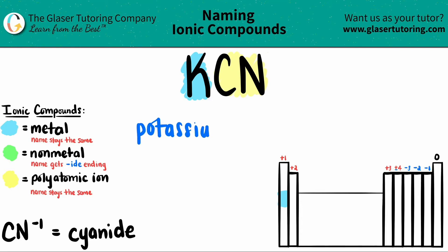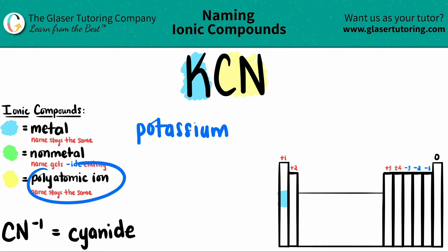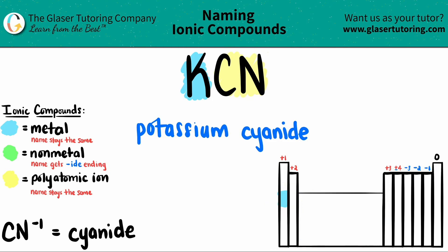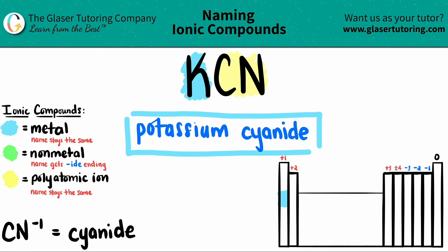Moving on to the next part. This is the polyatomic cyanide, and polyatomic ions — their name always stays the same. So if it's cyanide here, it has to be cyanide here. Now just do one last check. Since potassium is not a transition metal, it's not in this group, we don't have to give a Roman numeral. So you're done. KCN is potassium cyanide.